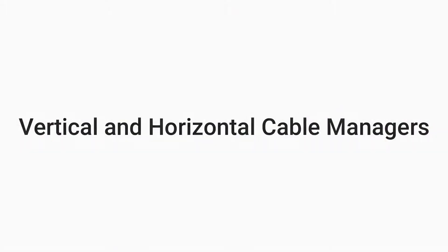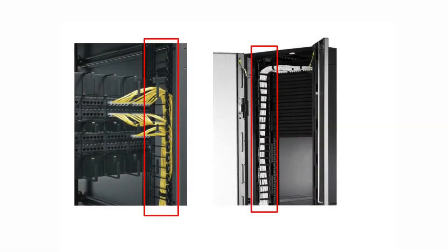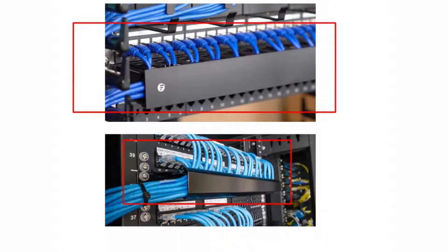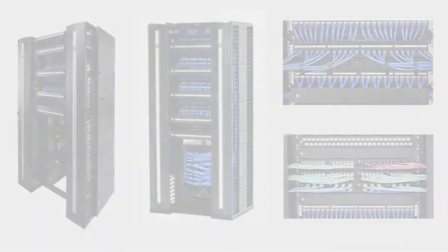While ladder racks manage the cables above the servers, inside the server rack or cabinet there are additional cable managers that organize the patch cables. Vertical cable managers are on the outside edges of the rack and manage cables running up and down. Horizontal cable managers are mounted to the rack between server devices and keep cables connected to the servers, directing them through a tunnel to the vertical cable managers along the side.